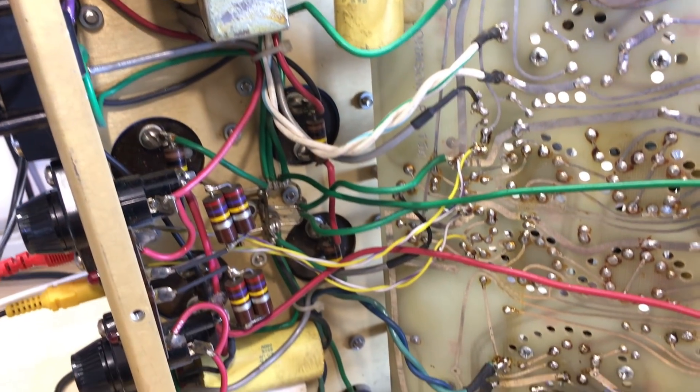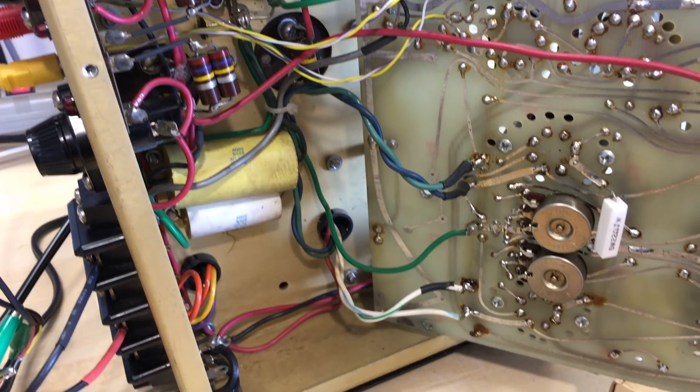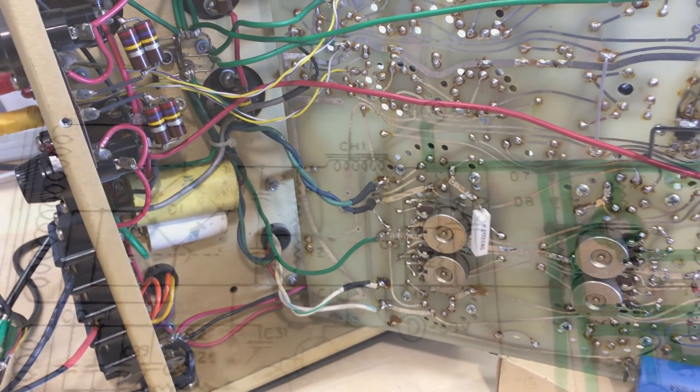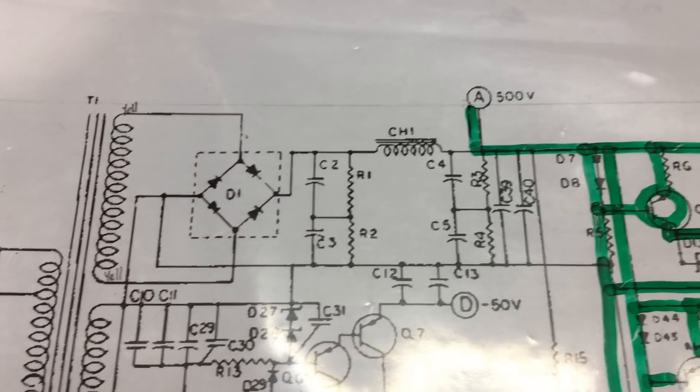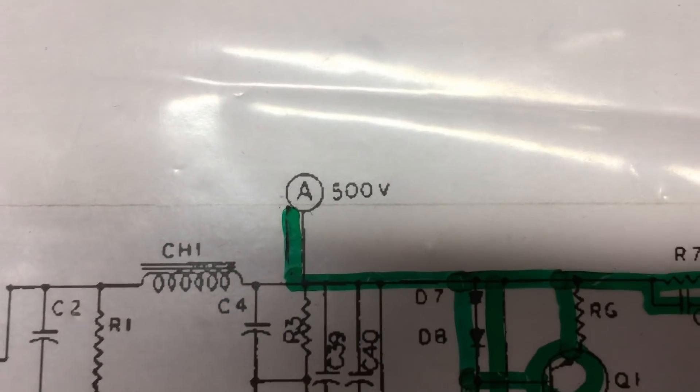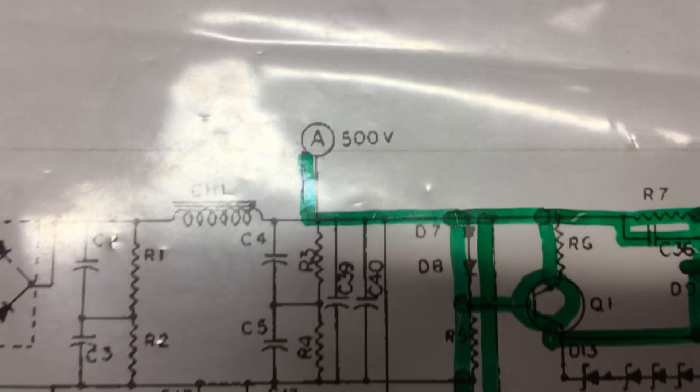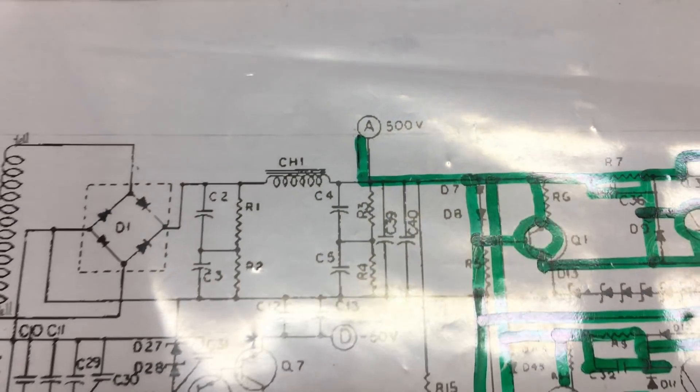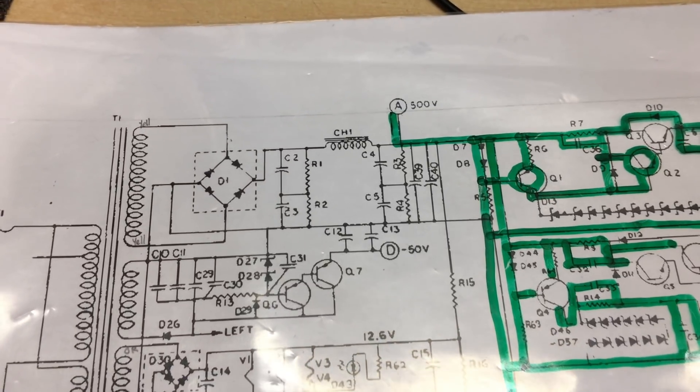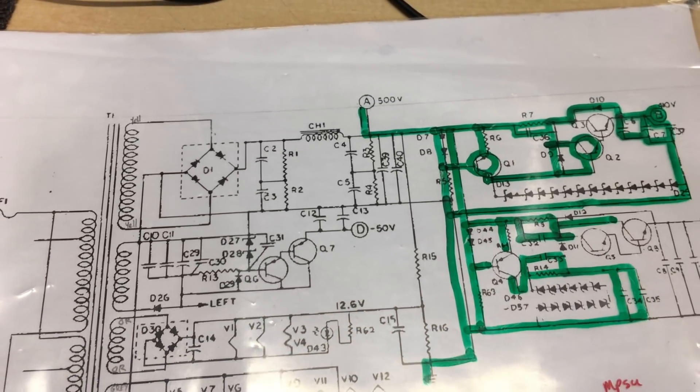My problem here is I've got probably about 560, 570 volts on the B-plus, and that is not what this amp was designed for. This amp was actually designed for a B-plus of 500 volts. Now 550, 560 starts getting a little bit on the dangerous side, and I think that's one of the reasons why some of these tubes were blowing up.